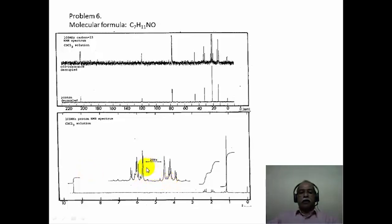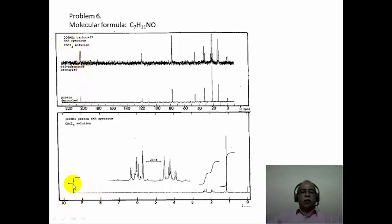Let us confirm that the integration corresponds to 4. Starting at the left end of the proton NMR spectrum, somewhere around 9.5 ppm there is a singlet. In the carbon-13 spectrum, there is a peak around 205 ppm, and this signal is split into a doublet in the off-resonance spectrum — which means this corresponds to an aldehyde signal, since only an aldehyde carbon appears as a doublet in the off-resonance spectrum.